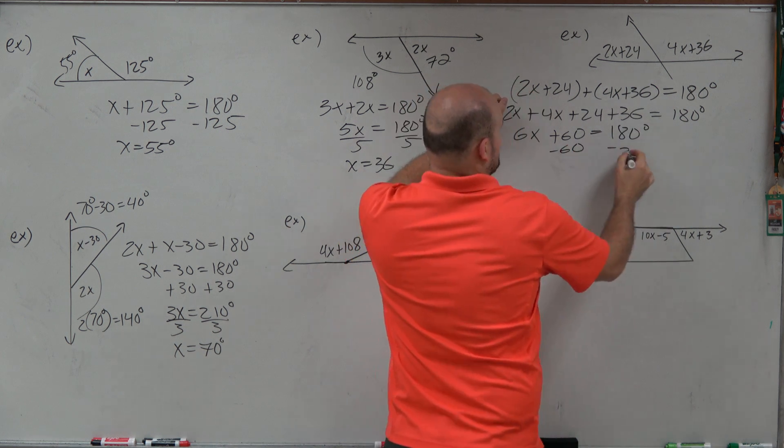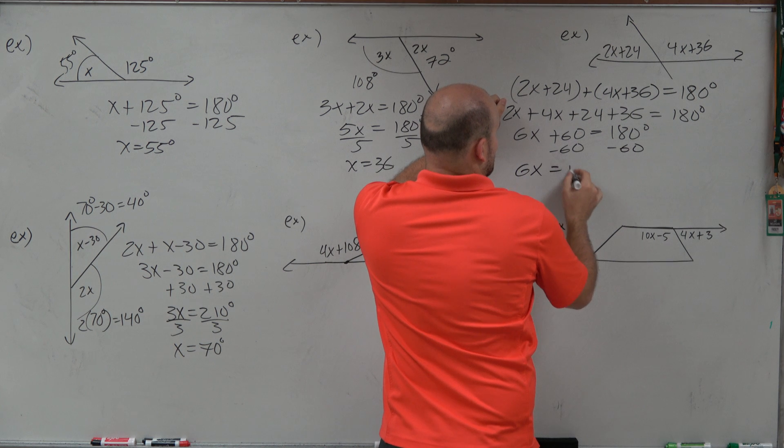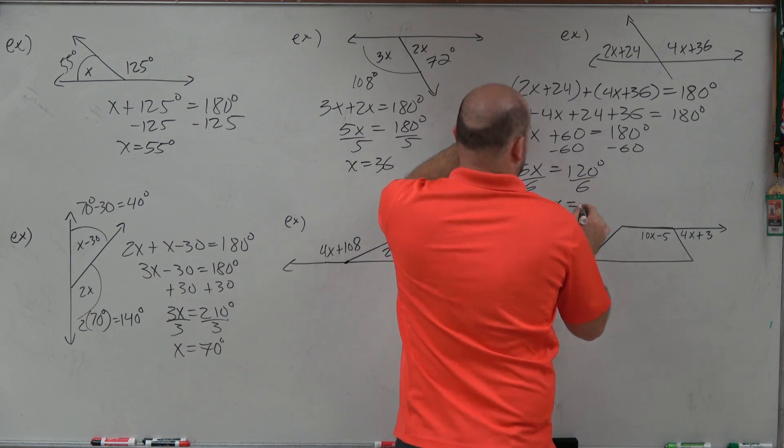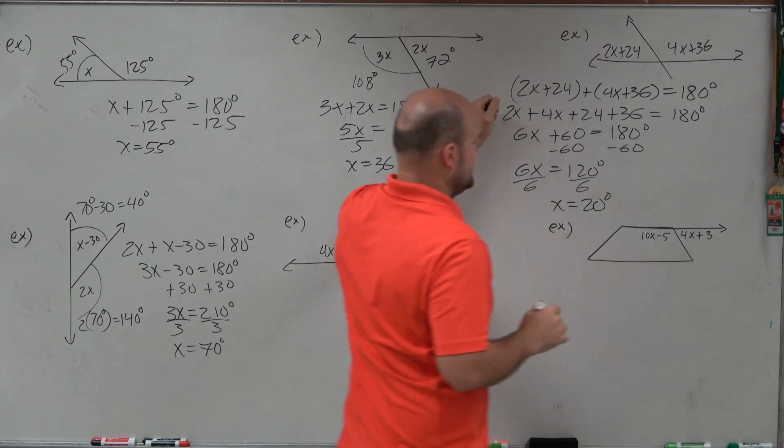Now I subtract 60, subtract 60. 6x equals 120 degrees. Divide by 6, divide by 6. X is going to equal 20 degrees.